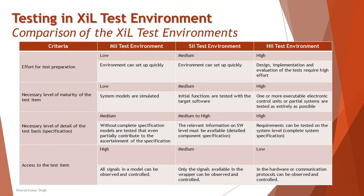Finally, the access to the test item. Mill is high because the model is very simple and straightforward — all signals in the model can be observed and controlled, so access to the test item is very high as the model contains all the equipment and information needed to run the test. In Zill it is medium — only the signals available in the wrapper can be observed and controlled, so access to test items is quite limited. In Hill it is low, as only hardware or communication protocols can be observed and controlled, so you don't need direct access to the test items and can manage everything from the environment itself.